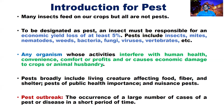Many insects, mites, nematodes, weeds, bacteria, fungi, viruses, and vertebrates such as wild animals — if they are causing economical damage to crops or animal husbandry, or any organism interacting with crop welfare and the well-being of human beings, we call it a pest.